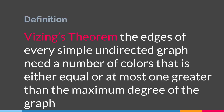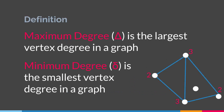Before we talk about what Vizing's theorem is, there is a new definition we have to discuss: maximum degree. For a graph, the maximum degree — denoted by capital delta (Δ) — is the largest vertex degree in the graph. The degree of a vertex is how many edges are connected to that particular vertex, and the vertex with the largest number of edges is the maximum degree of the graph.